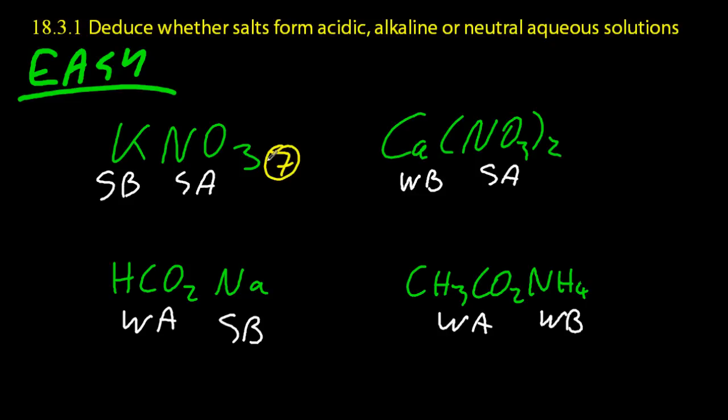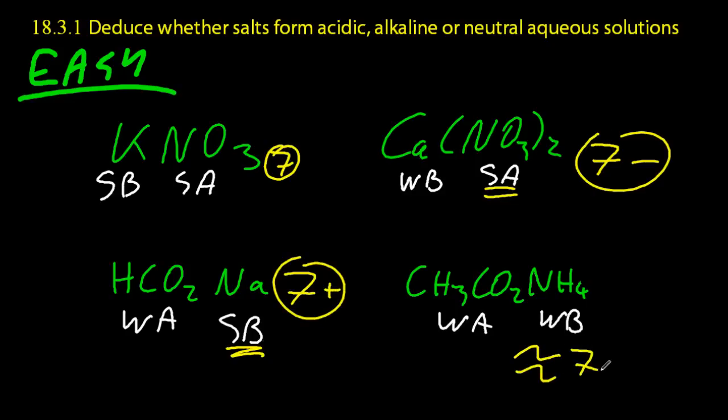So the trick is the pH goes towards the stronger component. So for calcium nitrate, it goes towards the acid, so it's below 7. And for sodium methanoate, it goes towards the base, above 7. It goes towards whatever the stronger one is that you use to make the chemical.